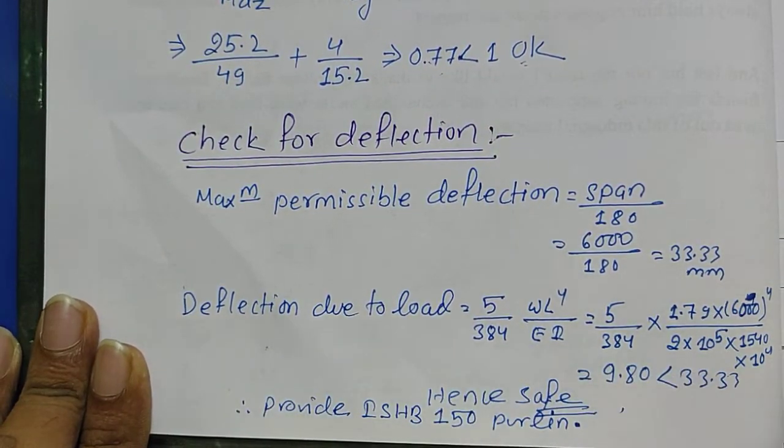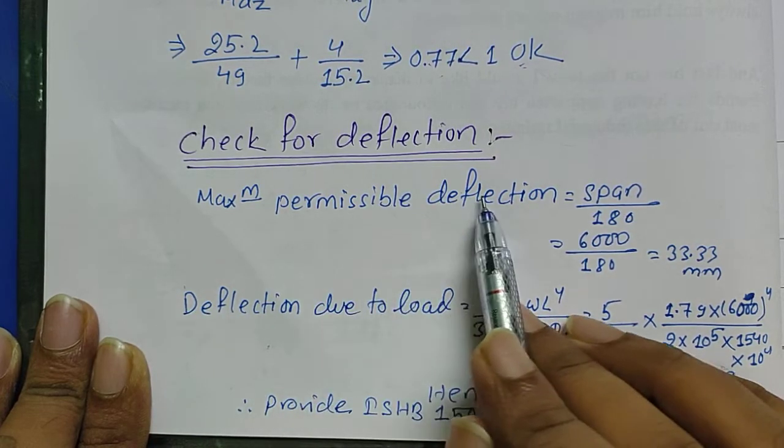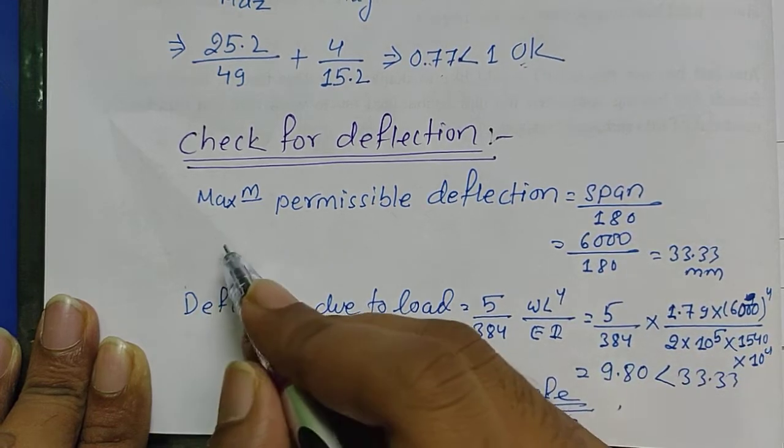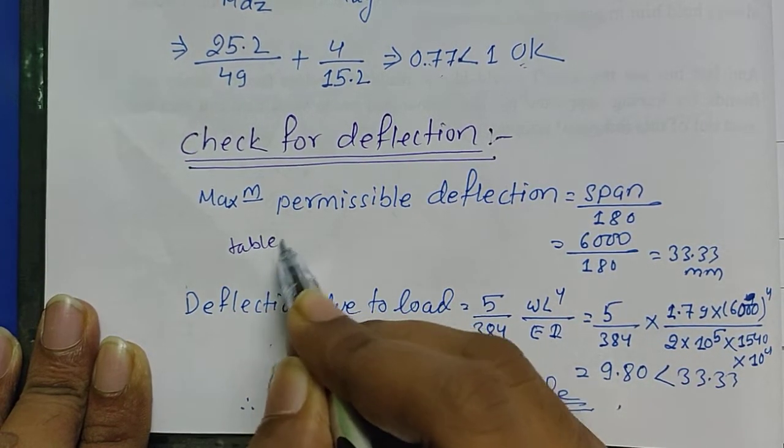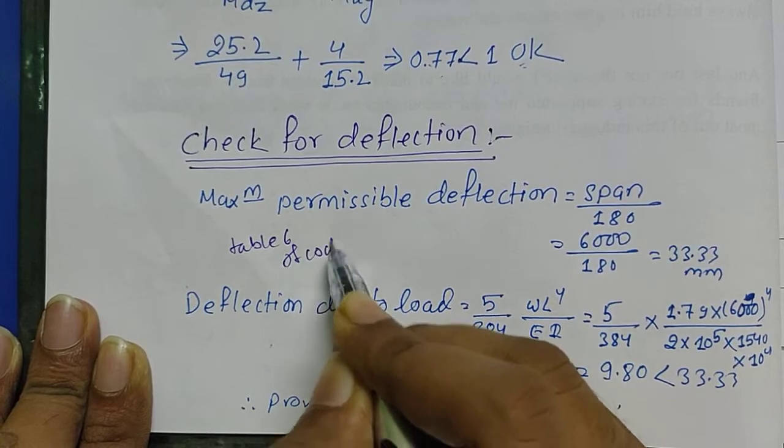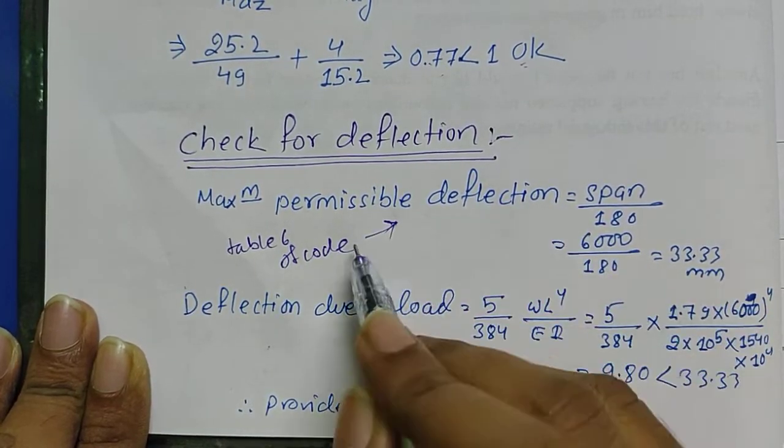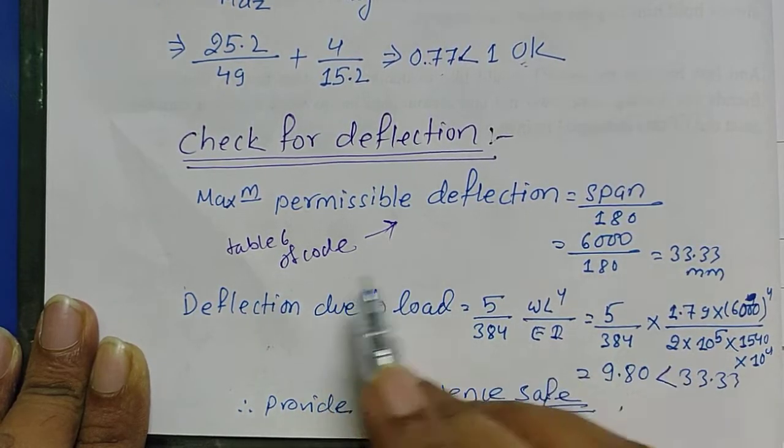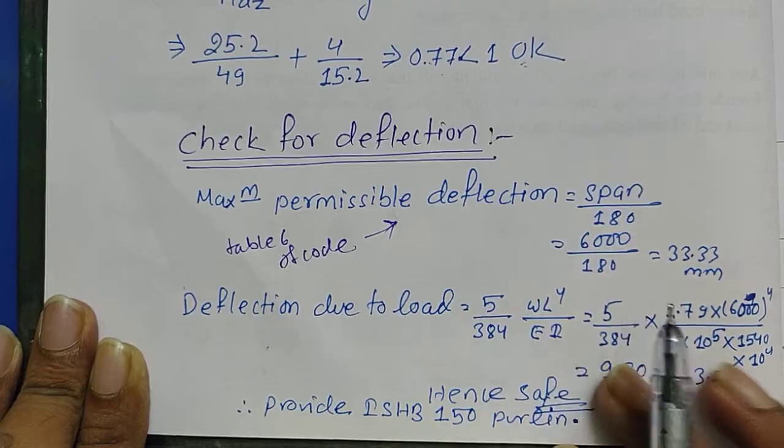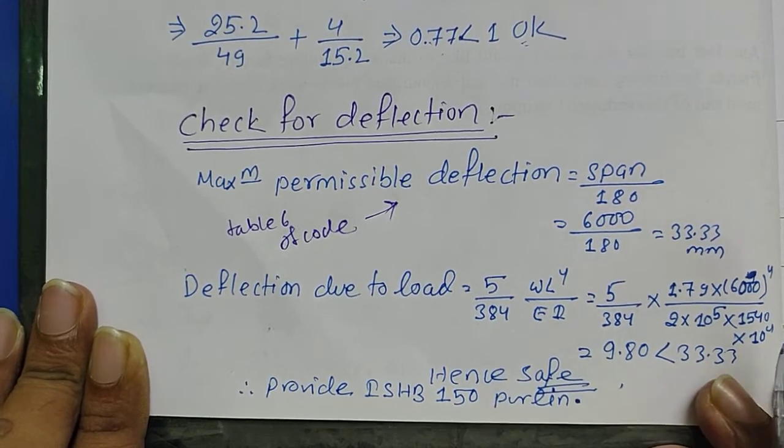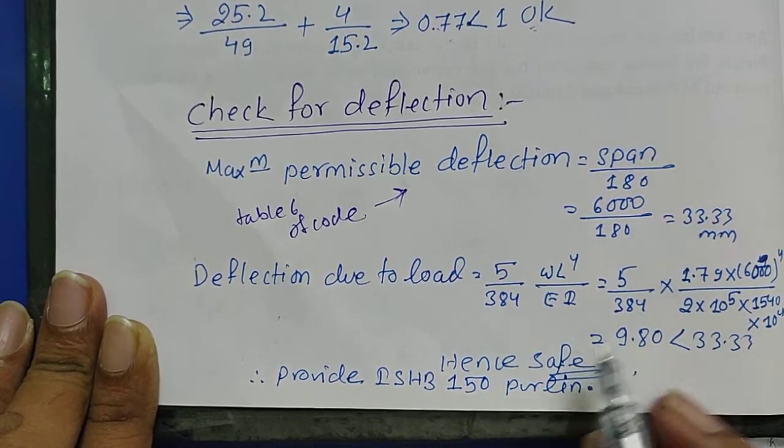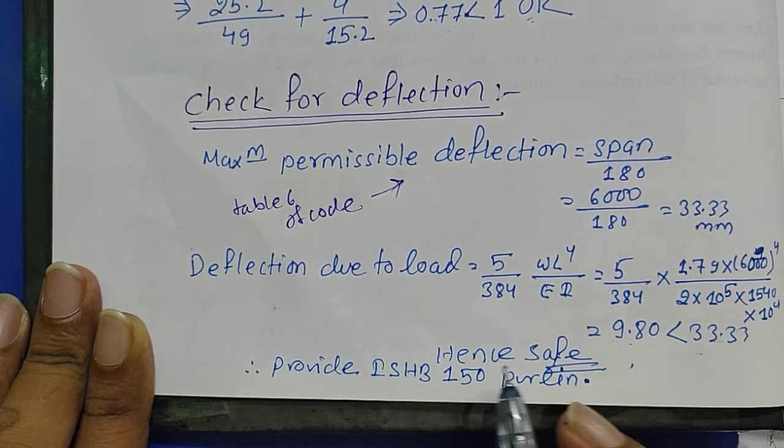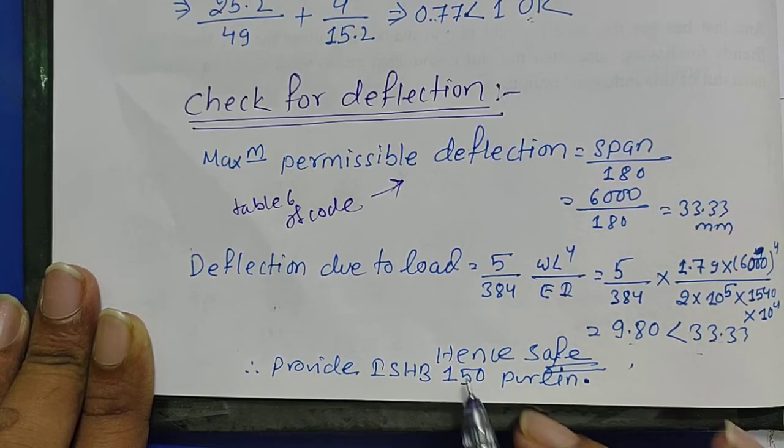One more check we need to apply is check for deflection. Maximum permissible deflection is in table 6 of code. We have to take for brittle cladding. For the deflection due to load we have formula 5 by 384 WL to the power 4 by EI. I have calculated the value. As it is less than maximum permissible, hence our section is safe and we can provide this purlin which is safe and as per the design.